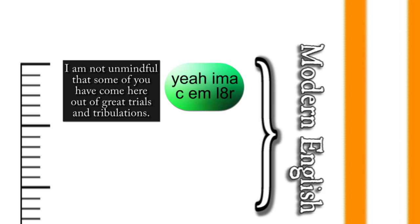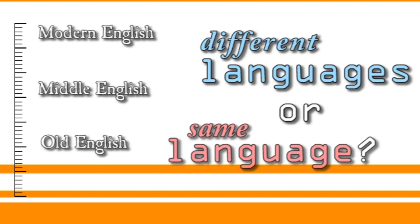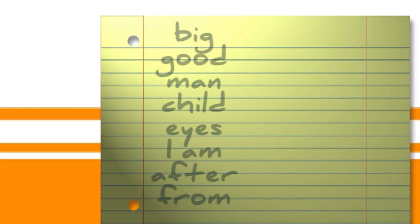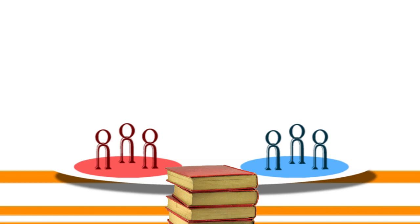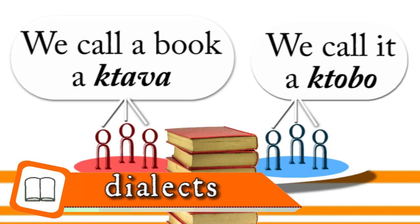So are these three languages or three different stages of the same language? But history is always messier than we want it to be, so let's just stick to the present. Here are some basic words in English, and these are the same words in a totally different dialect of English. They're two dialects, because if the same language gets spoken in different ways by different groups of people, we call those different dialects.